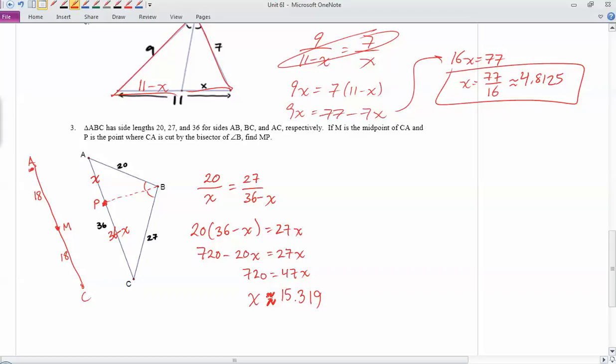Well, X isn't what we're trying to find. We're trying to find the distance from M to P. Well, let me put P on this diagram. So AP, this thing right here, is 15.319. So that's from here to wherever P is. AM was 18. So the question is, well, how long is that? Well, if I do 18 minus 15.319, then I get MP. So MP is 18 minus 15.319, which ends up being like 2.681 roughly. And there we go. Alright, I hope that helps a little bit. And I'll see you guys soon.